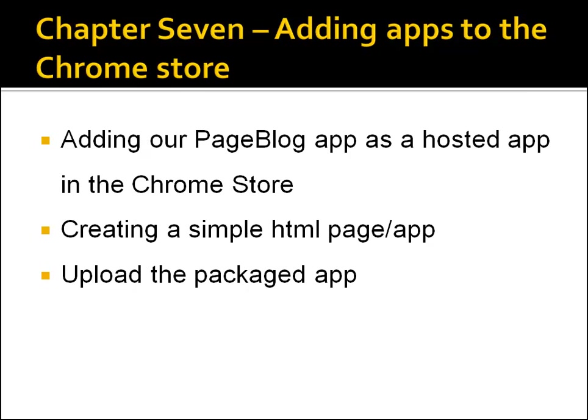In chapter seven, we'll basically take our Facebook page blog application and add it as a hosted app in the Chrome Store. A hosted app is essentially just a link to another domain or another application. We'll also be creating a very simple HTML and JavaScript app, which we can package and upload as a packaged app.